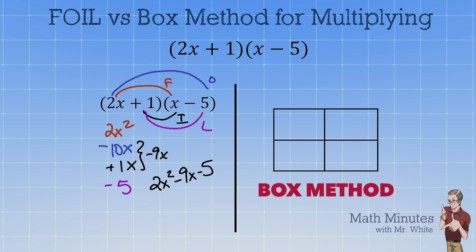With the box method here it goes. We take the two different binomials and we look at them as having the two terms. And we write the 2x up here and the +1 from that left hand binomial. And then we write the x here and the -5 down here. Now what do we fill in these boxes?